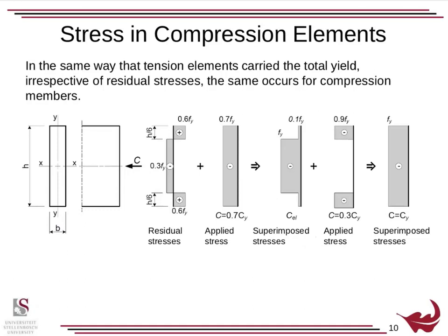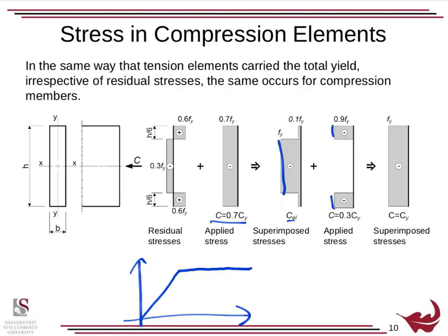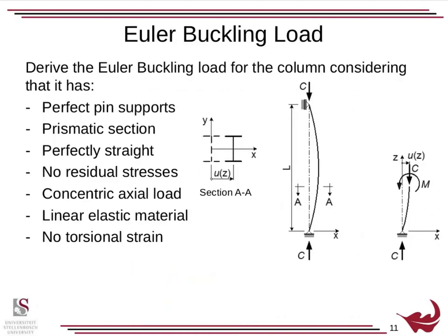As discussed in our tension elements section, we do have residual stresses in a section. But since the fact that we have a ductile material, as we load it up and one part reaches its yield, it continues in a plastic fashion. If we have residual stresses and apply a load, one part yields and another hasn't — we add on some more load, and all that will happen is those bits will catch up, and eventually the whole section will be yielded. So we can assume the entire section can carry the yield load, even though in reality we do have residual stresses.